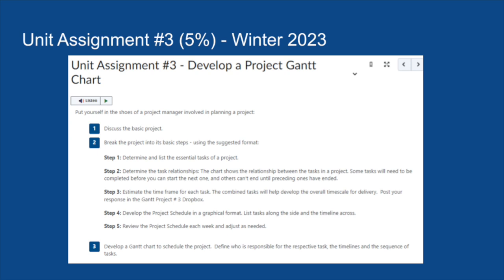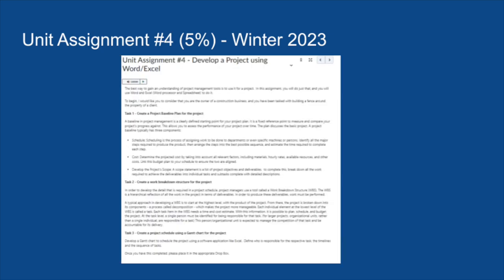The third assignment deals with a Gantt chart, which is a tool used to schedule or visibly show the schedule of a project — and there you're going to build one. In unit four, we're going to use Excel and Word as tools to complete a basic project, looking at how we set up pre-planning for a project, which is what that assignment is really focused on.